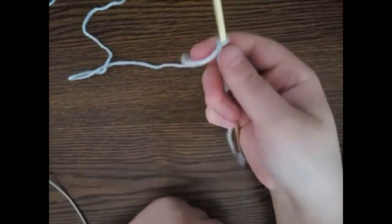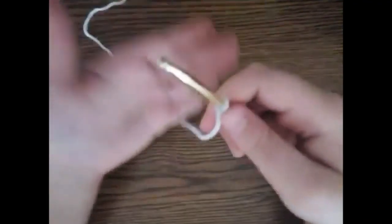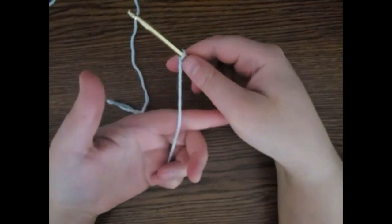I only do this to keep the tail out of my way for now. I place the rest of the yarn over my left hand. I secure the yarn down using my pinky.